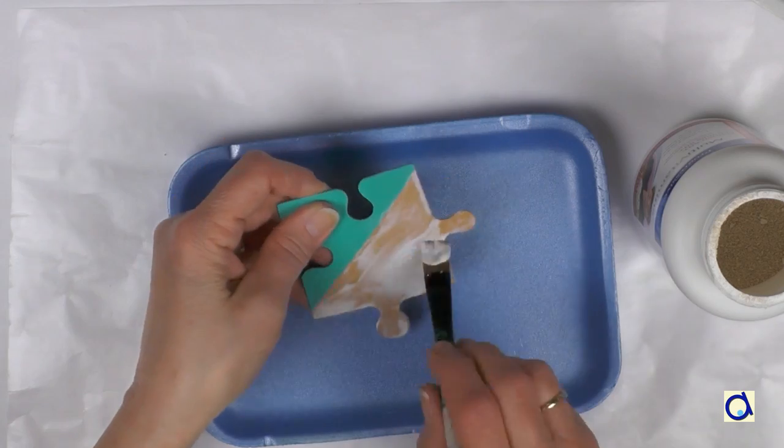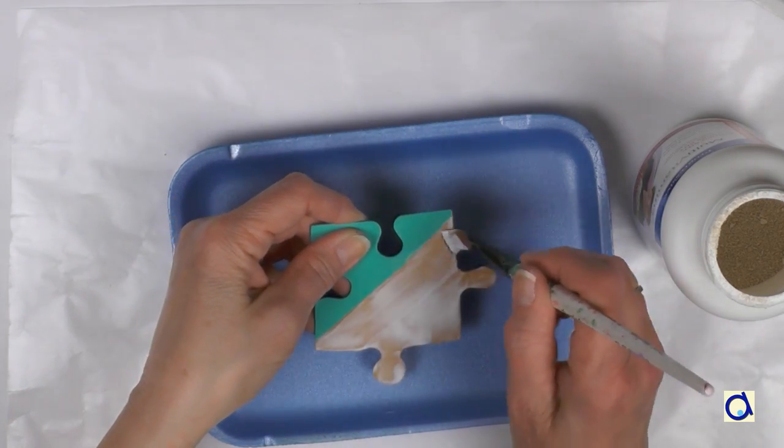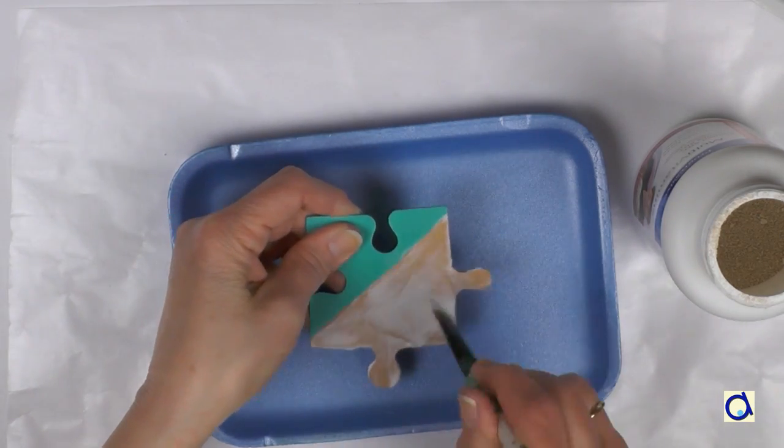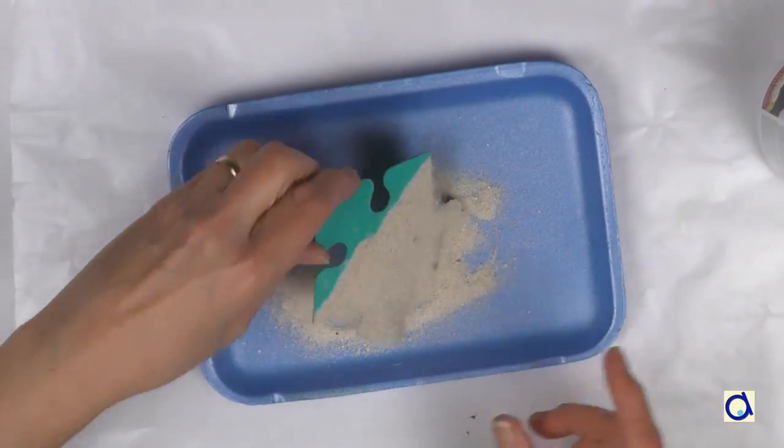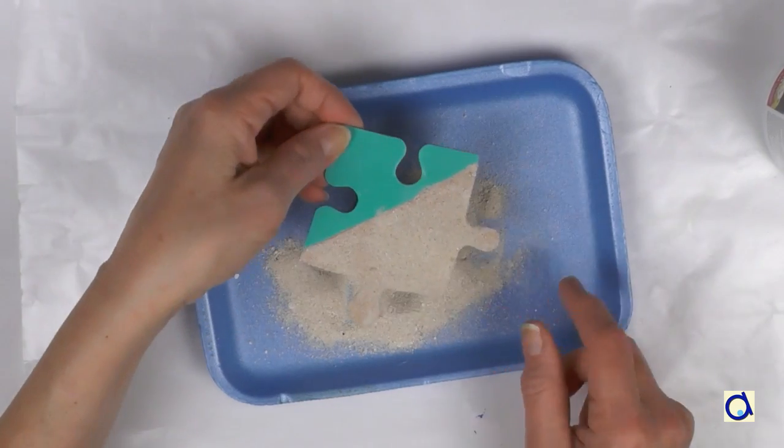Put the puzzle piece in a small dish and spread white glue on the sand colored part. Then, pour sand on the glue. Remove the excess of sand and let dry.